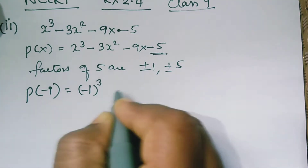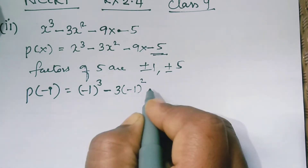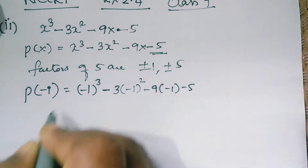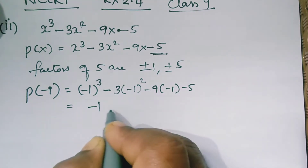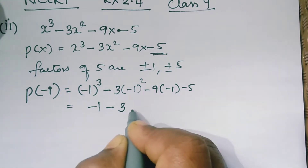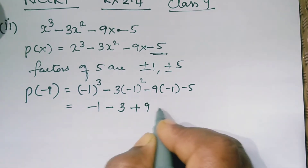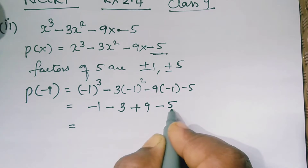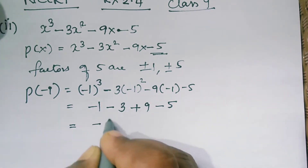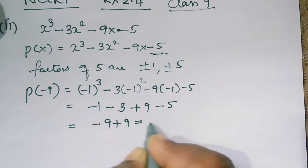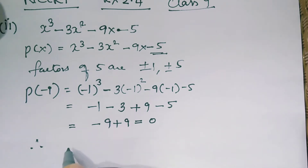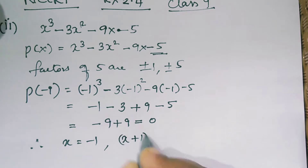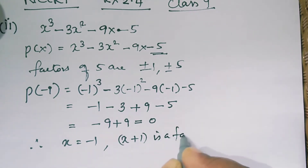Now we will take minus 1 as one of its factors and check whether the remainder is 0. Wherever you have x, substitute with minus 1, and you get minus 1 minus 3 plus 9 and minus 5. Regrouping these, minus 9 and plus 9 give 0, so the remainder is 0. From this, we can conclude that minus 1 is a factor of the given polynomial.